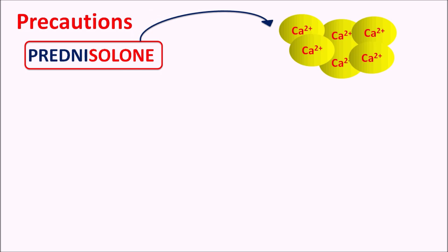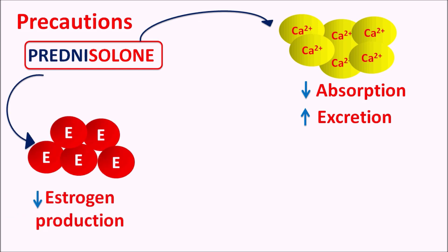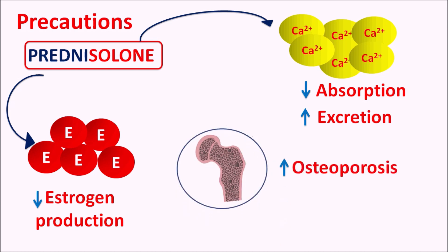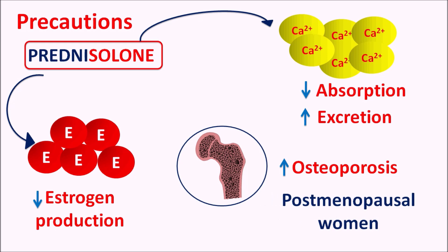Prednisolone can reduce calcium levels — it reduces calcium absorption through the intestine and increases calcium excretion. Because of these two actions, serum calcium availability is reduced, resulting in decreased bone mineral density. It can also reduce estrogen production, which further reduces bone mineral density. Therefore, prednisolone can increase the risk of osteoporosis, particularly in postmenopausal women where this risk is more pronounced, so care should be taken when prescribing to postmenopausal women.